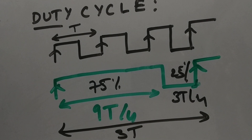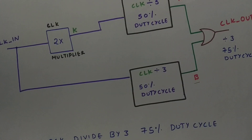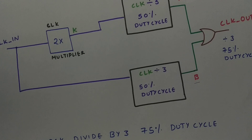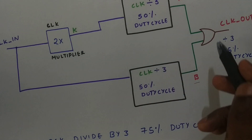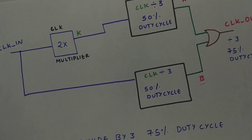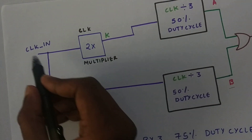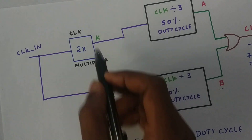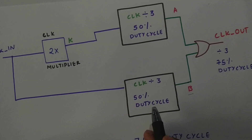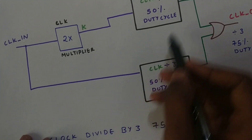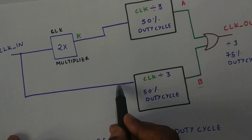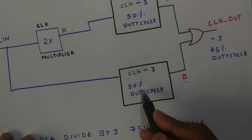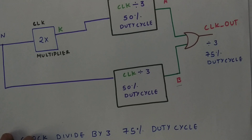Now let's look at the circuit for clock divided by 3 with 75% duty cycle. It is very simple if you know the 50% version. The circuit uses two clock-divided-by-3 blocks with 50% duty cycle, an OR gate, and a 2x clock multiplier. The 2x multiplier doubles the frequency of clock-in to produce K, which is fed to one clock-divided-by-3 block giving output A. Clock-in is also fed directly to another clock-divided-by-3 block giving output B.